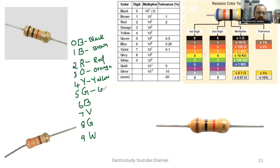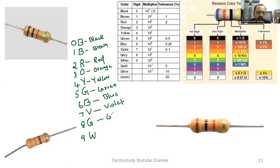The fifth one should be green color, the sixth one should be blue color, next will be violet, the eighth one should be gray color, and finally we should have white color.